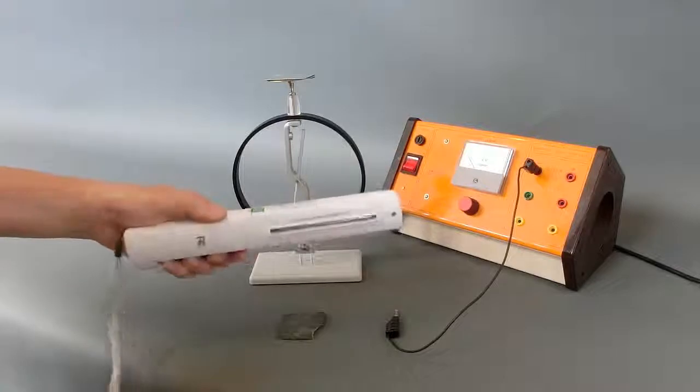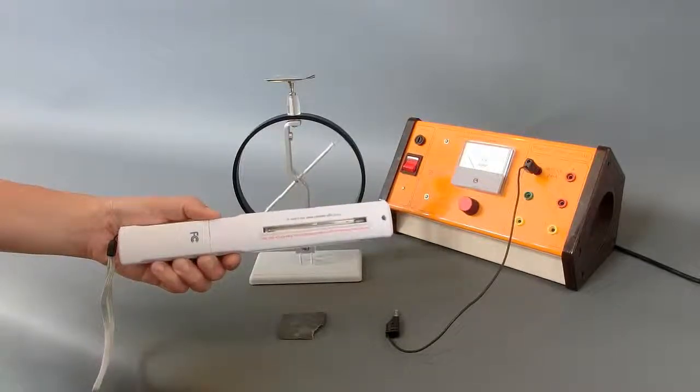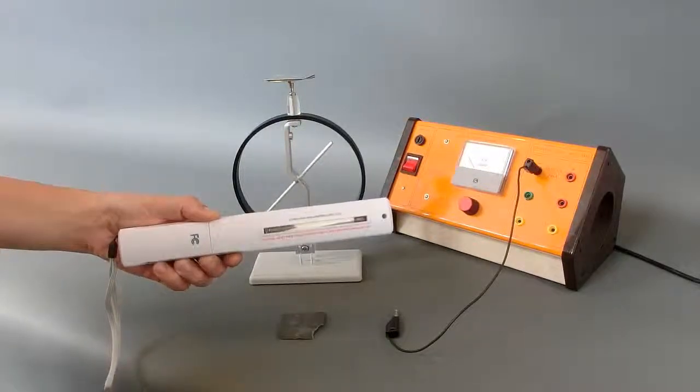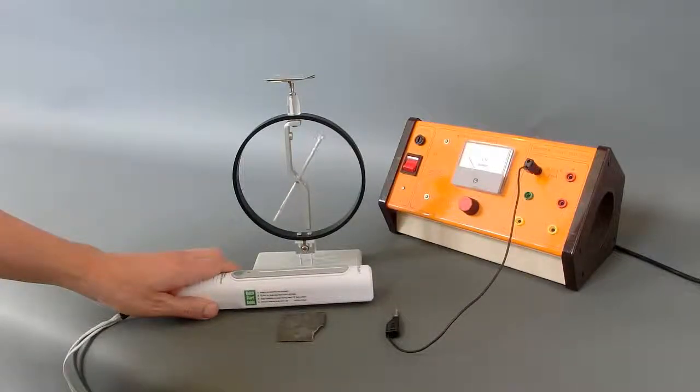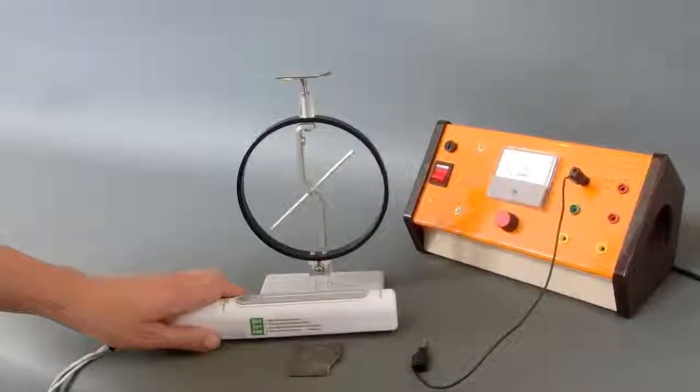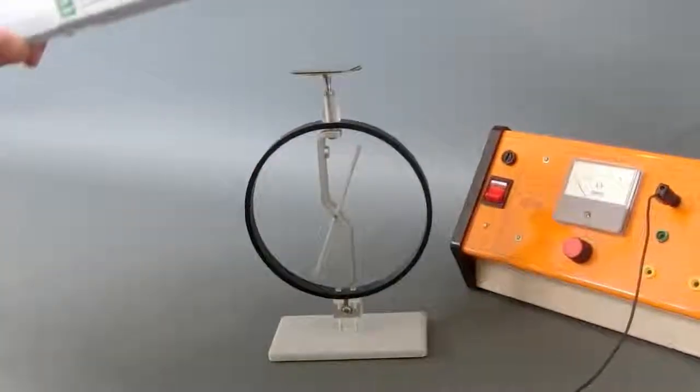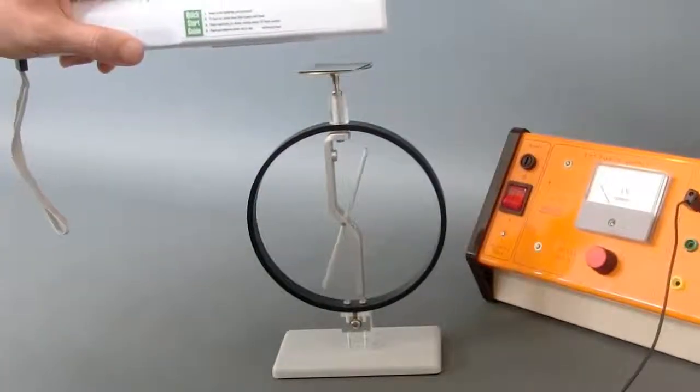What we're going to do is use this high frequency ultraviolet lamp to illuminate the top surface of the zinc. What we'll see is that as electrons are ejected from the surface by the photoelectric effect, the electroscope will discharge.